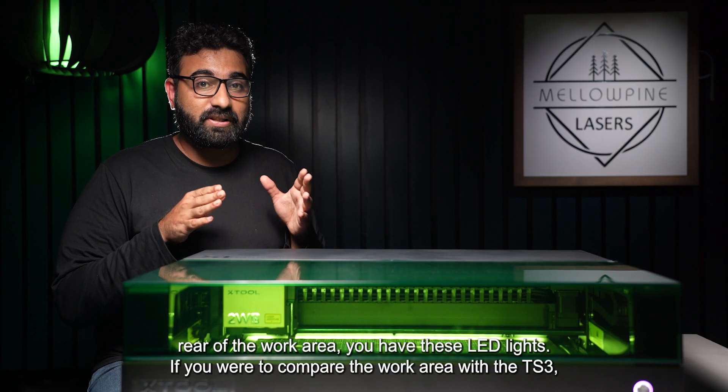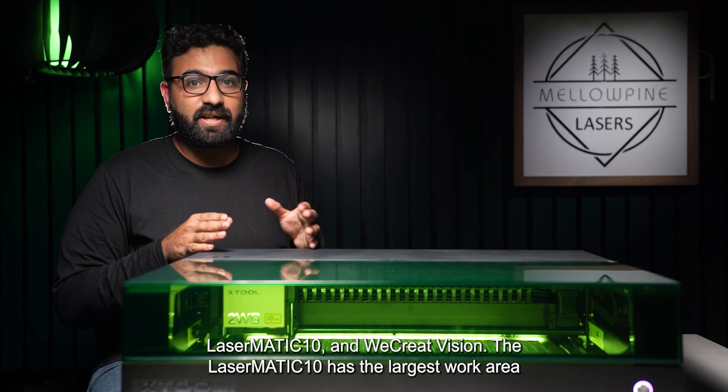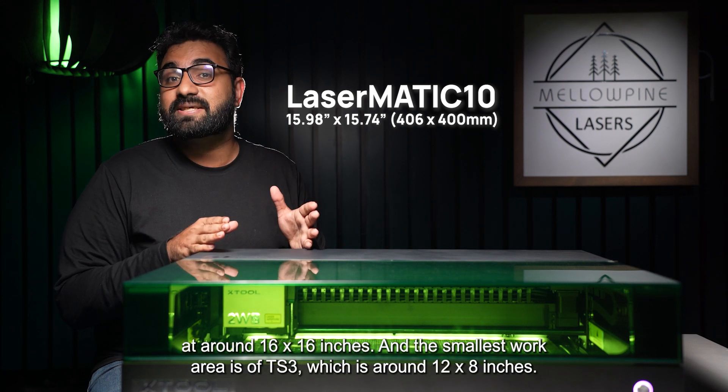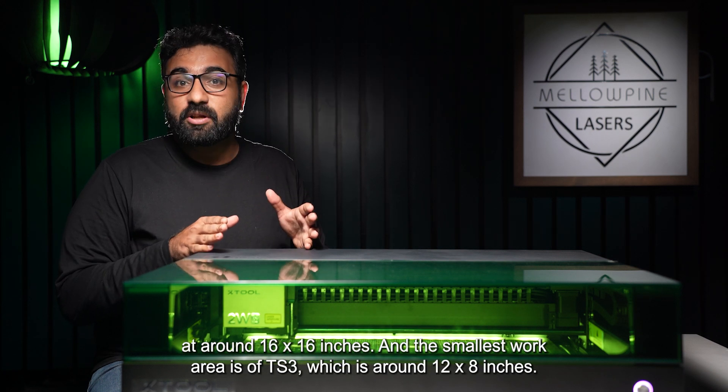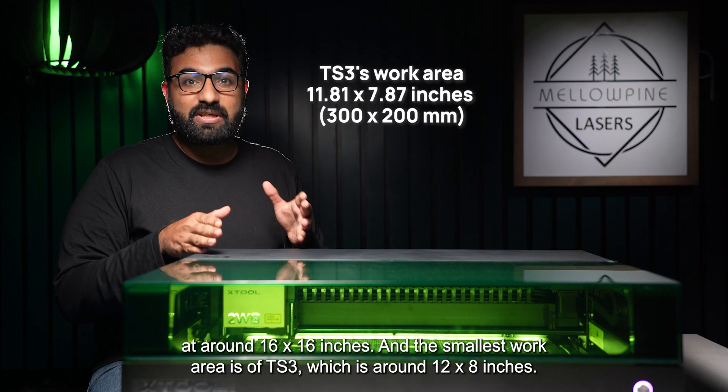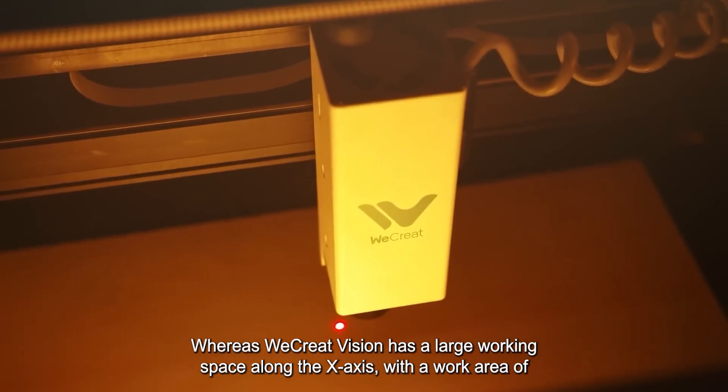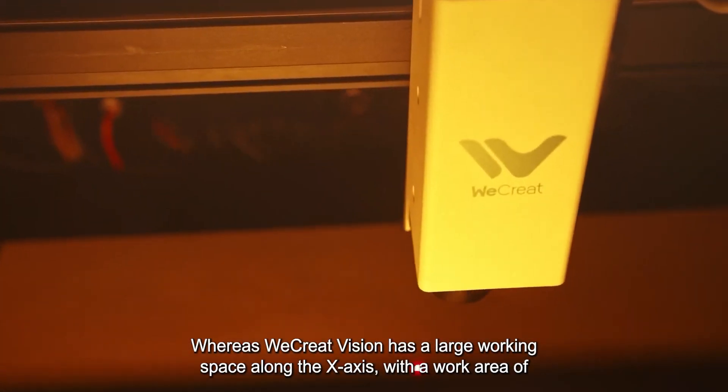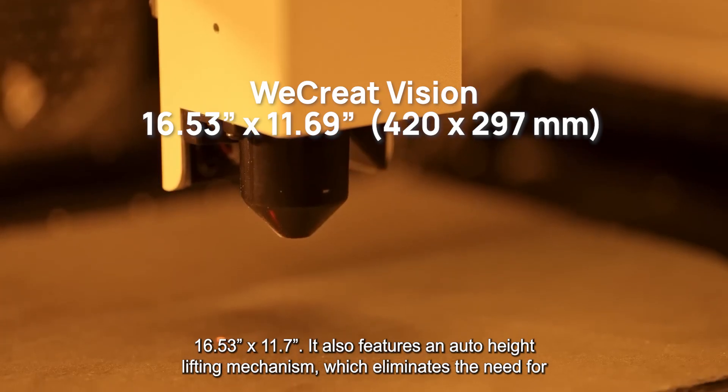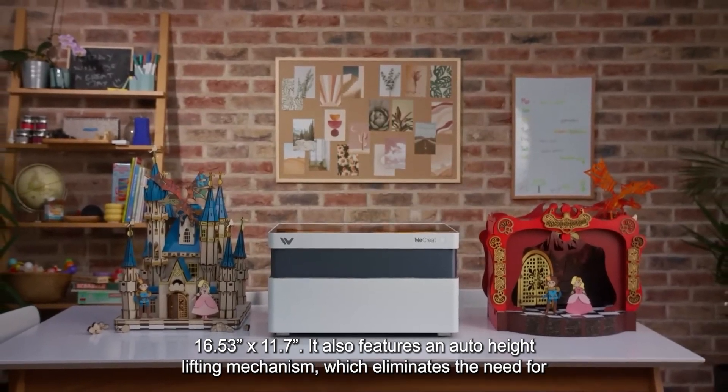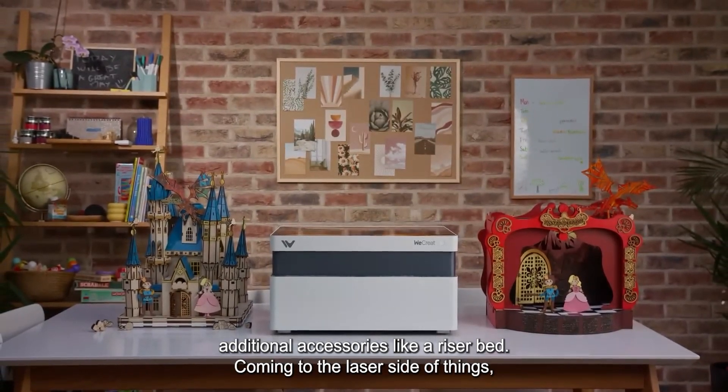If you were to compare the work area with the TS3, LaserMatic and WeCreateVision, the LaserMatic has the largest work area at around 16 by 16 inches and the smallest work area is of TS3 which is around 12 by 8 inches. Whereas, WeCreateVision has a large working space along the X axis with a work area of 16.5 by 11.7 inches. It also features an auto height lifting mechanism which eliminates the need for additional accessory like a riser bed.